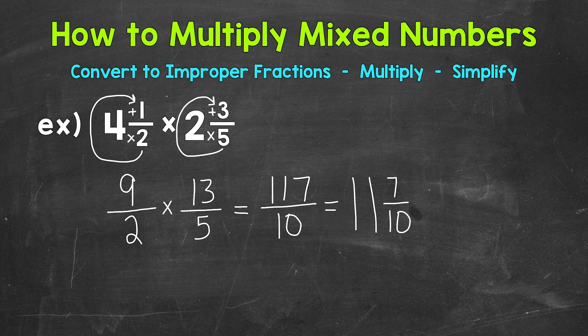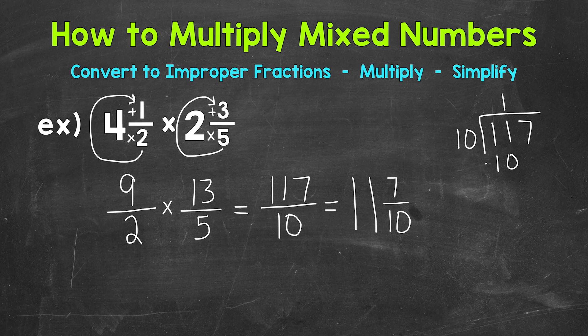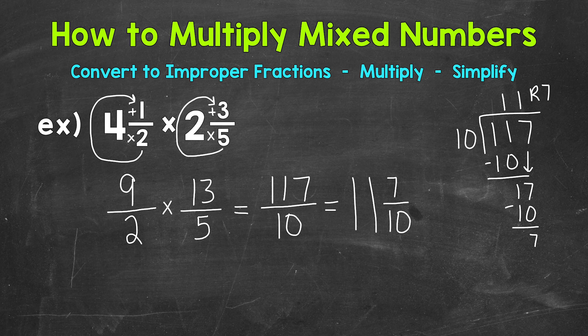Now, if you're unable to do that using mental math, you can always come to the side and write out the division problem. So for example, we'll start with how many whole groups of 10 out of 11? 1. 1 times 10 is 10. Subtract. We get 1. Bring down the 7. So how many whole groups of 10 out of 17? 1. 1 times 10 is 10. Subtract. And we get a remainder of 7. So we get the same thing either way. Sometimes problems are a little more friendly and we can do them using mental math. Sometimes we may need to write out the division problem. Either way works.